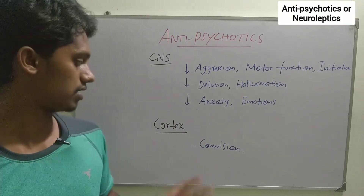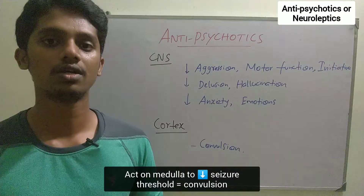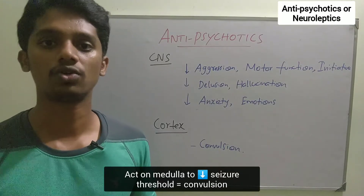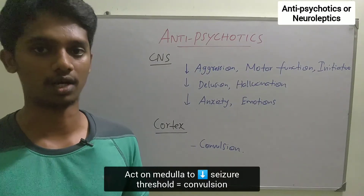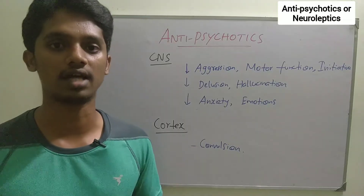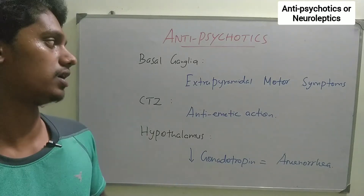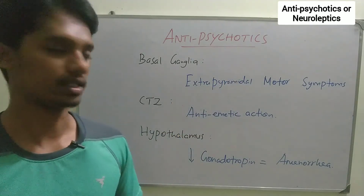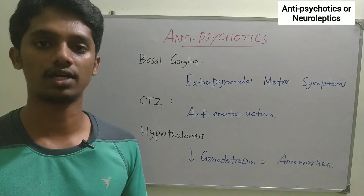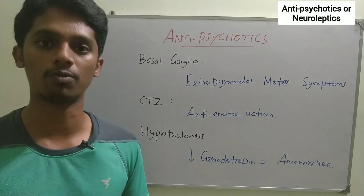These drugs are not selective. In the medullary cortex, the seizure threshold is lowered. When the brain activity increases further, convulsions can be precipitated. In the basal ganglia, the extrapyramidal motor symptoms are formed. These include Parkinsonism — with bradykinesia, tremor, and muscular rigidity — and the motor functions are reduced.